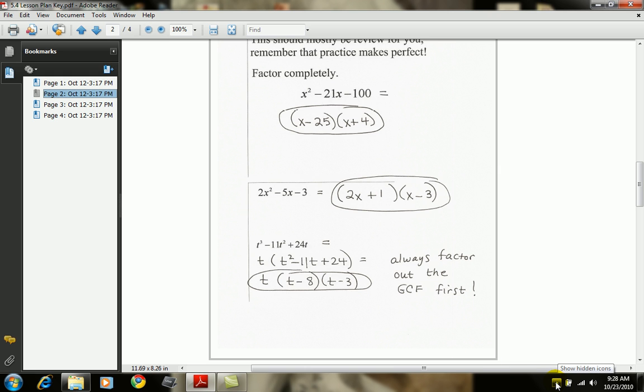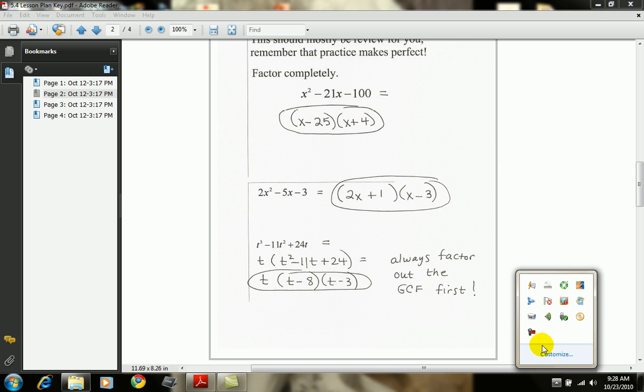Some of you have also been taught a method called the AC method, which is a perfectly acceptable factoring method. But trial and error seems to be the major preference. But if you know the AC method, by all means use it.